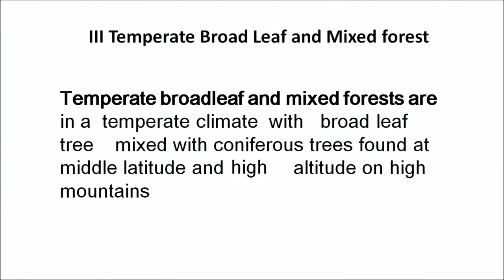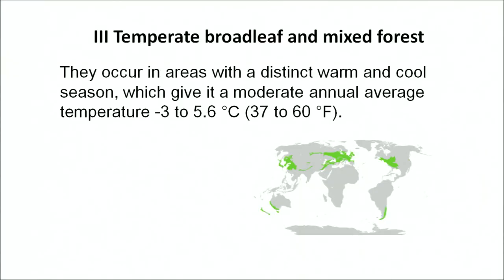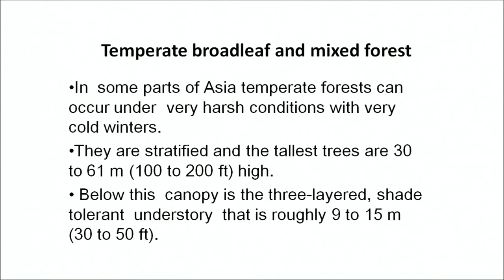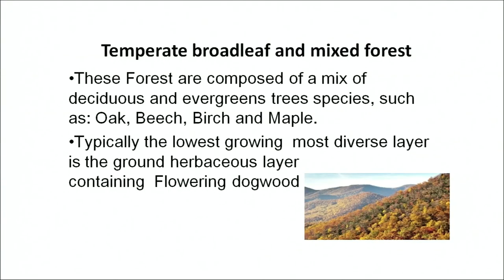The next type is temperate broadleaf and mixed forests, found at high altitudes on the mountains and middle latitudes. They occur in areas with a distinct warm and cool season, which give them a moderate annual average temperature between minus 3 to 5.6 degrees Celsius. In some parts of Asia, the temperate forests can occur under very harsh conditions with very cold winters. They are stratified and the tallest trees are up to 30 to 61 meters in height. Below this canopy, a three-layered shade-tolerant understory of plants is found with a height of 9 to 15 meters. These forests are composed of mixed deciduous and evergreen tree species such as oak, beech, birch and maple.